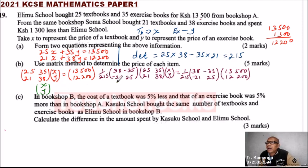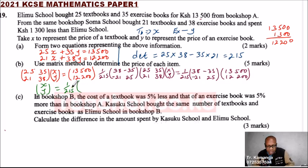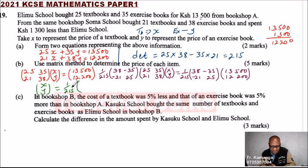So what we need to work out is the right side. We say it is 1 over 215 times the matrix. Using your calculator: 38 multiplied by 13,500, then add — in a bracket — minus 35 multiplied by 12,200. Close the bracket.